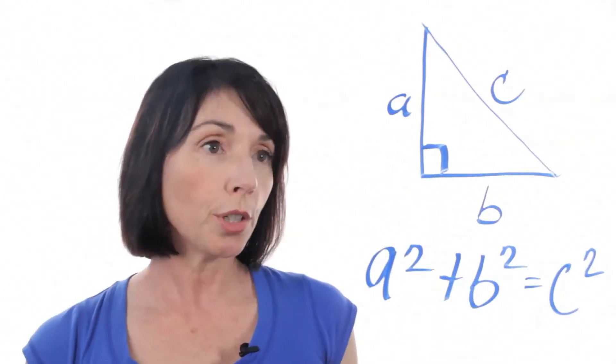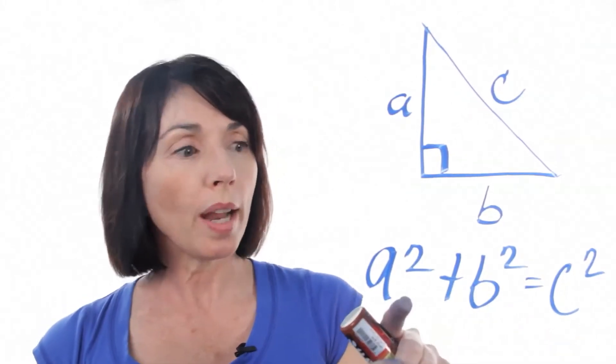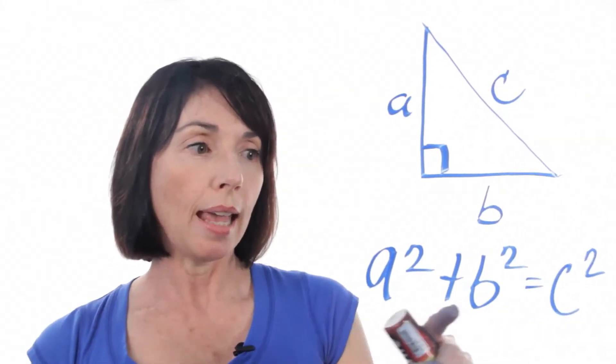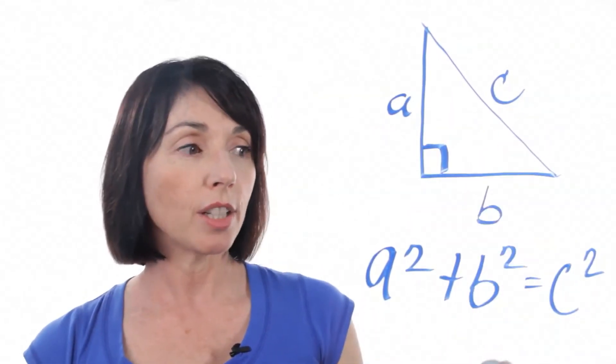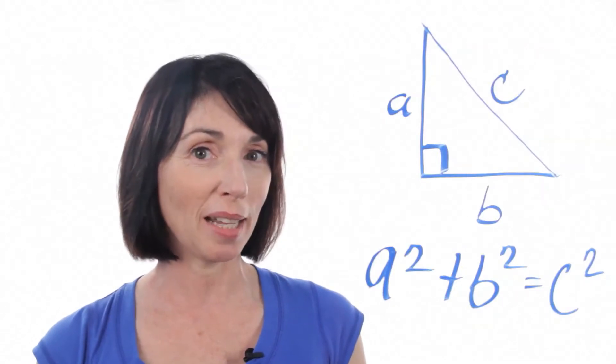Now, it's important to remember when you use this formula that you're squaring all these values, A, B, and C. And if you're trying to find the length of one of the sides, you'll have to take a square root at the end to determine it.